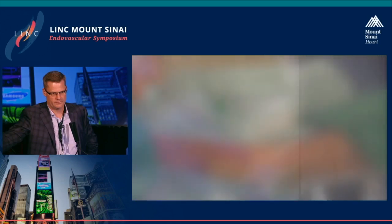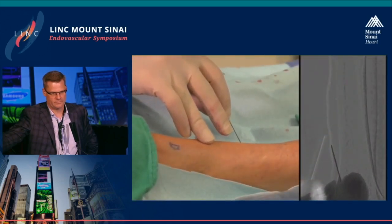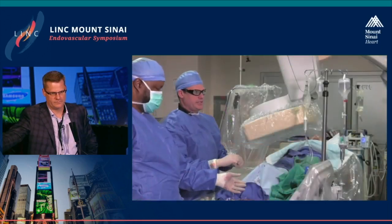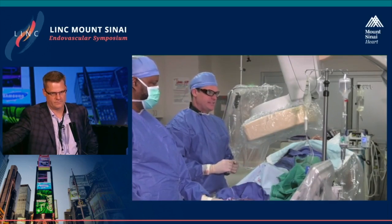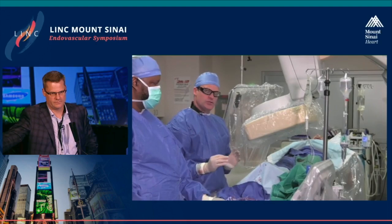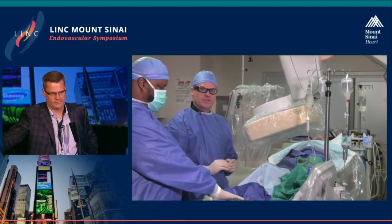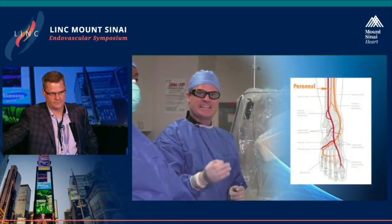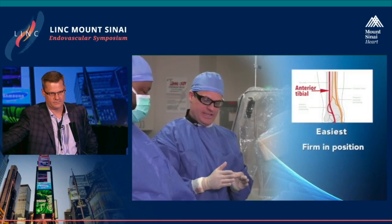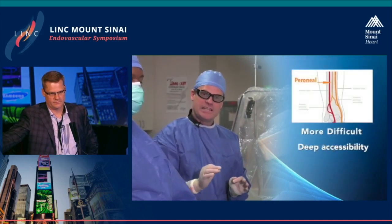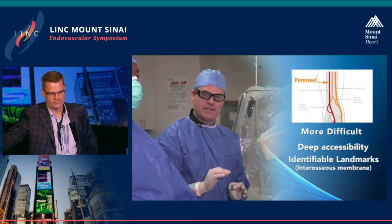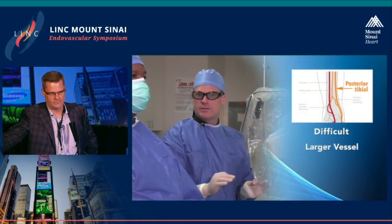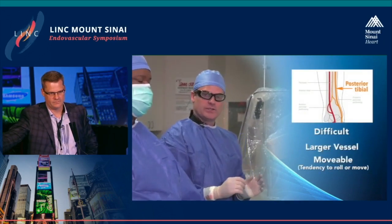If you look at the hardest vessels to access: typically the posterior tibial is the hardest. The peroneal is next, and the anterior tibial is the easiest. The anterior tibial is easiest because it's held in place and superficial. The peroneal is held in place even though it's deep — you have great landmarks with the interosseous membrane behind it, so you feel one pop and right behind it is the peroneal. But the posterior tibial, even though it can be a large vessel, tends to move and is not held in place, so it tends to roll off your needle.